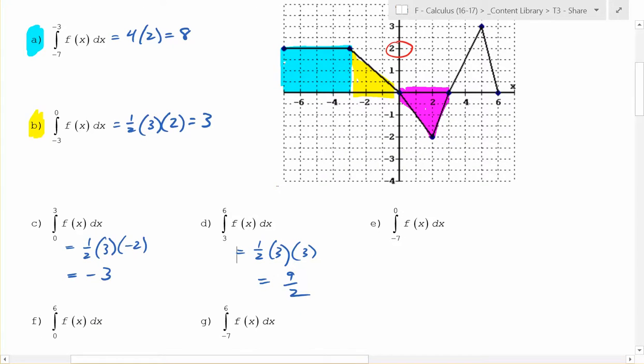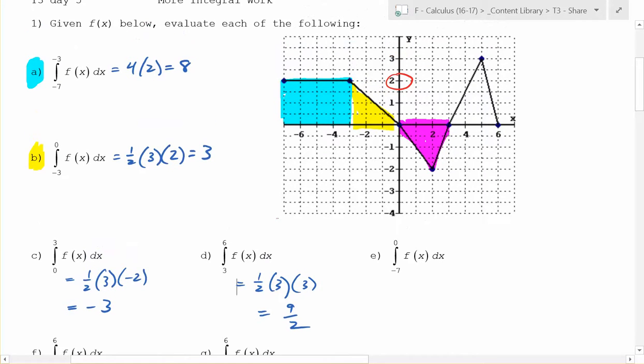0 to negative 7. From 0, so from negative 7 all the way to 0. From negative 7 all the way to 0. Which ones are those two? Exactly. You can add together a and b. It's asking for what's this whole area right there? What is that whole area going to be equal to? 11. Exactly.